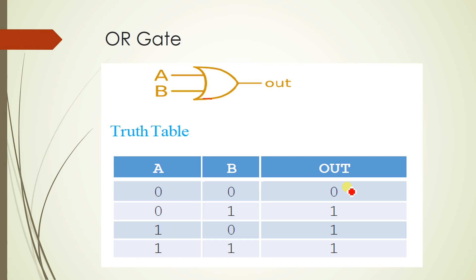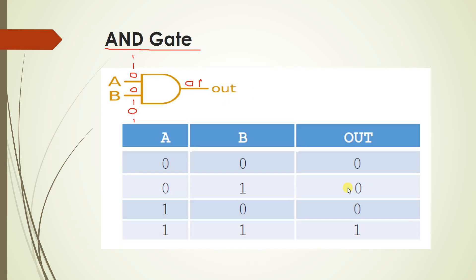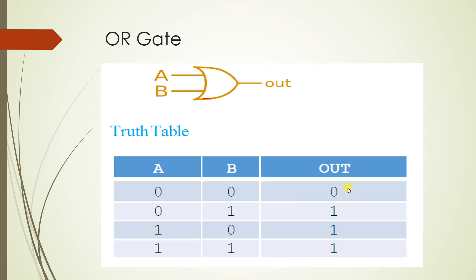As long as there is at least one 1 in the input, the OR gate outputs 1. So: 0 OR 1 = 1, 1 OR 0 = 1, 1 OR 1 = 1. But if both inputs are 0, the output is 0. That is the logical operation of the OR gate — it is the exact opposite of the AND gate in that only the all-zero case gives 0.